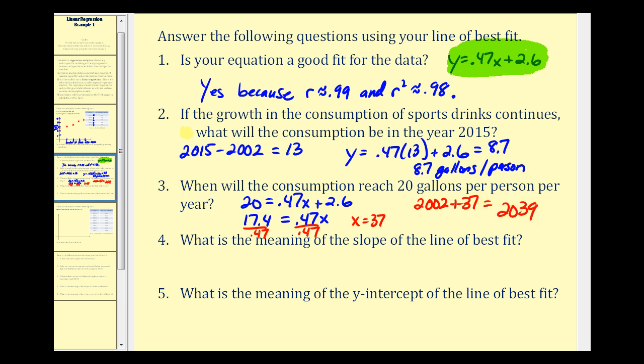And then for number four, what is the meaning of the slope of the line of best fit? Remember the slope is the coefficient of x. So our slope is point four seven. If we want to understand what this means, it's often helpful to write this as a fraction over one. Remember the slope tells us the change in y with respect to the change of x. Y tells us the number of gallons of consumption per year, and x tells us the year. So the meaning of the slope is that we have an increase of point four seven gallons per person per year.